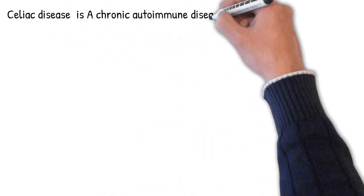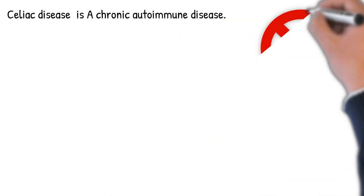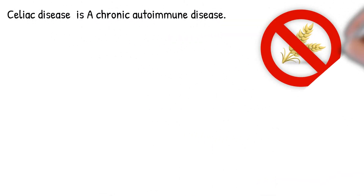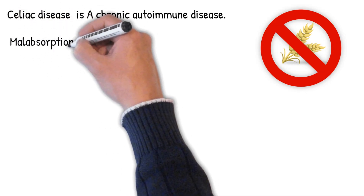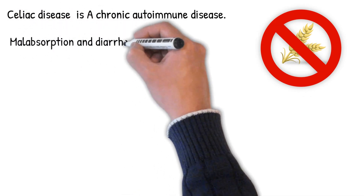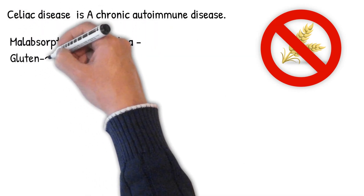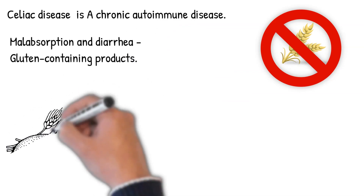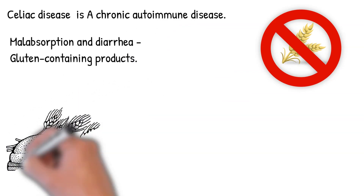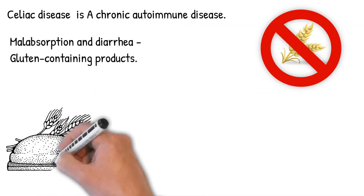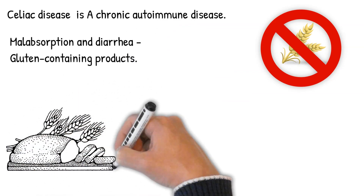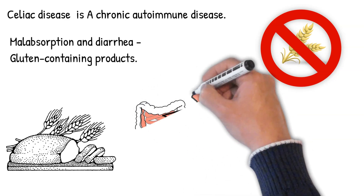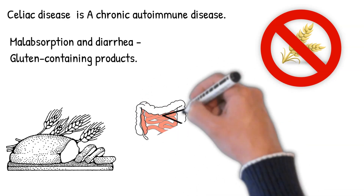Celiac disease is a chronic autoimmune disease characterized by malabsorption and diarrhea, associated with the ingestion of gluten-containing products. Celiac disease is caused by a reaction to gluten, a group of various proteins found in wheat and in other grains such as barley and rye.